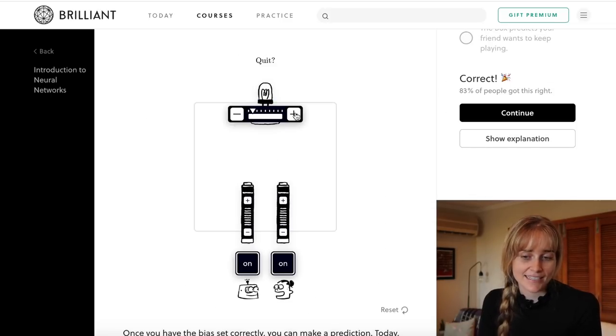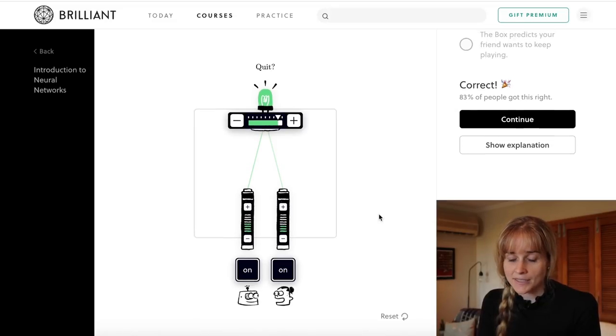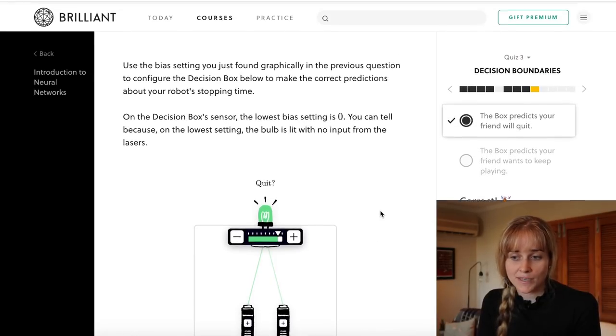So I've set the bias of this LED to seven like we worked out in the previous graph and we can try the little problem that they give us. So they say we've won three games and the opponent has won four, and indeed the LED is activated here so that would mean that it is predicted that our friend will want to quit.